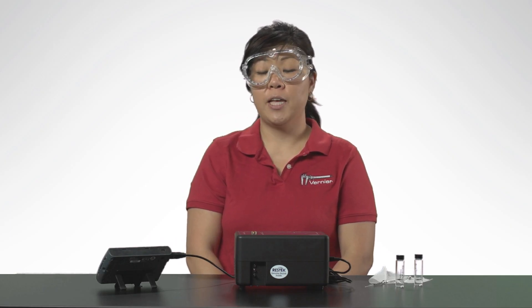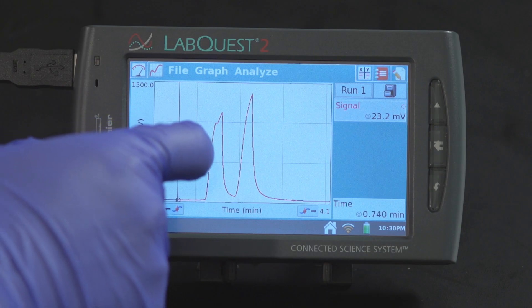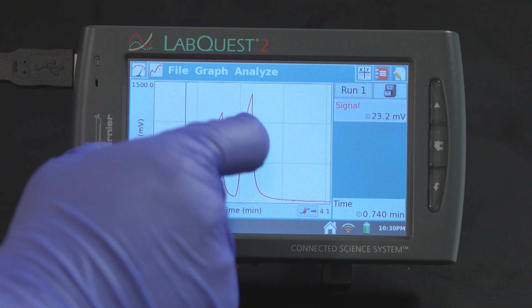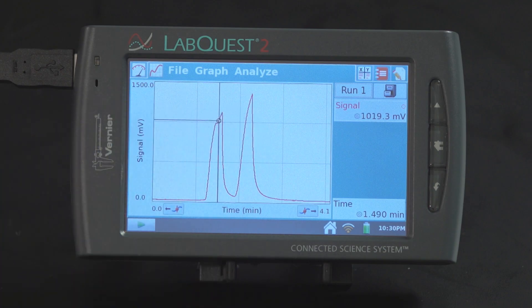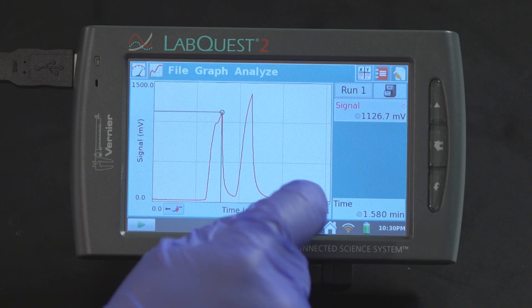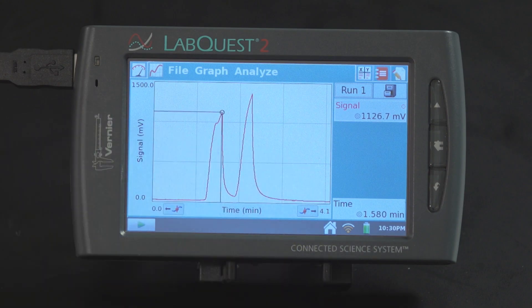To identify the retention time for a peak, tap on the graph on the screen. This will bring up the examine line. Move the examine line to the top of the peak by tapping on the screen. To fine-tune the location, use the nudge tools located at the bottom of the graph. The time displayed represents the retention time for the selected peak.